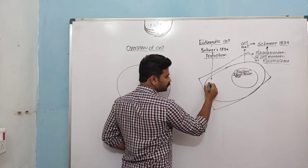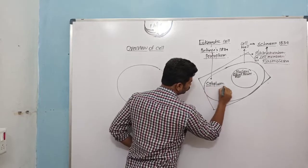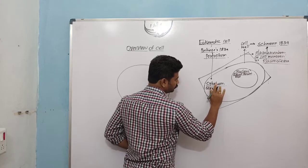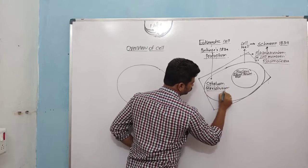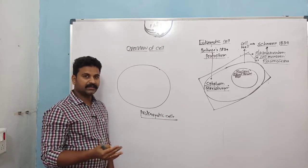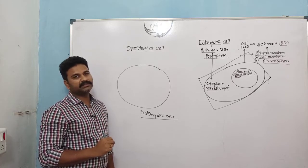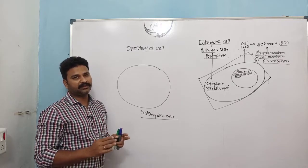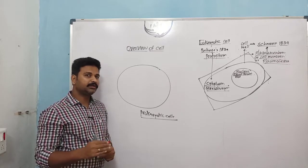The material inside the cell is called protoplasm, which is the physical basis of life. The protoplasm present inside the cell membrane but outside the nuclear membrane is called cytoplasm. Cytoplasm is the main arena of cellular activity.